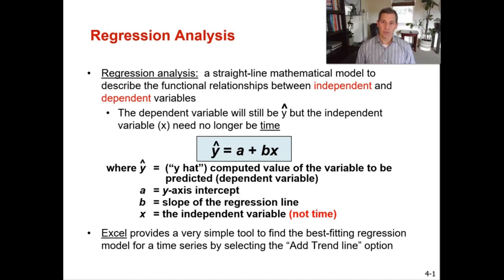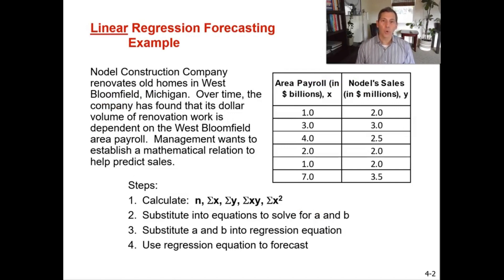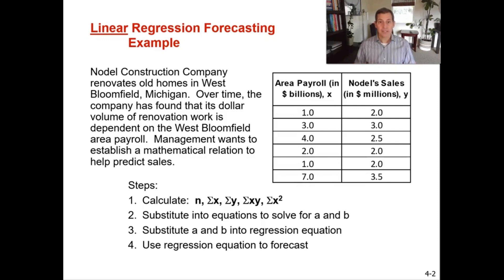I'll go over a linear regression example for Nodal Construction in Microsoft Excel at the end of this video. Nodal Construction Company renovates old homes in West Bloomfield, Michigan. Over time the company has found that its dollar volume of renovation work is dependent on West Bloomfield's area payroll, and management wants to establish a mathematical relation to help predict sales. Nodal Construction thinks that the higher the area payroll in the city, the more construction there will be — logically, if people have more money they want to renovate their homes. They believe this trend exists and want to use linear regression to confirm it and predict future sales.